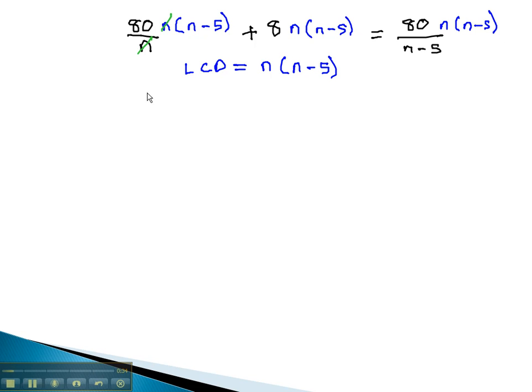When we do, the n's divide out, and we get 80 times n minus 5, plus 8n times n minus 5, equals, with the n minus 5's dividing out, 80n.